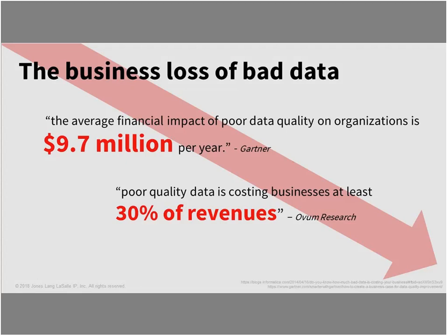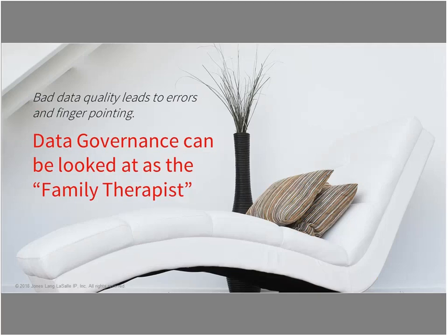To put some numbers out there: Gartner says the average financial impact of poor data quality on organizations is about $9.7 million a year. Open Research says poor quality data is costing businesses at least 30% of revenues. Just putting some numbers out there to give people an understanding — there is an impact. These are numbers you can share when telling people: we don't have good data quality, and it's costing us. Most people at this point understand this point.